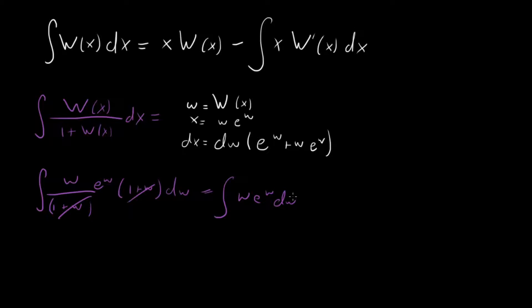And this is an integral that we know how to do using integration by parts. And I'll just do that really quick. This is going to be equal to what? This is going to be equal to w e^w minus integral of e^w dw. Nice and easy. This guy comes out to w e^w minus e^w plus constant. Great.